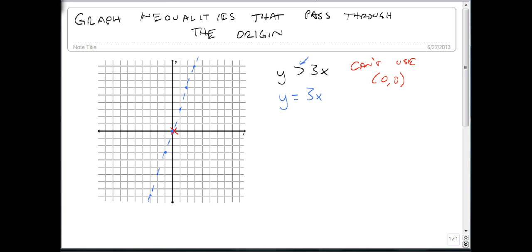So we pick any other point we want. I like to pick it so that it has a 0. Let's use the point (2,0) and see if that point is true.